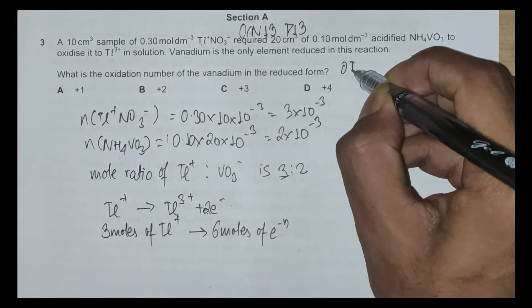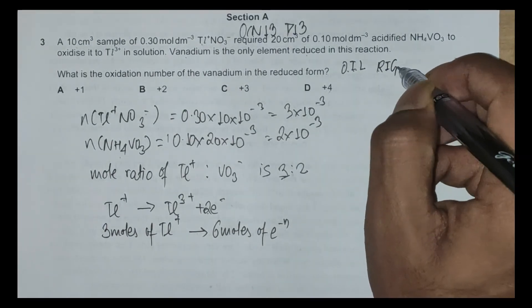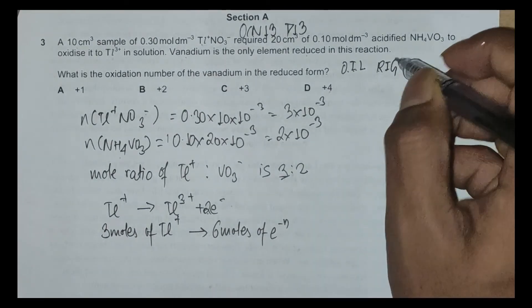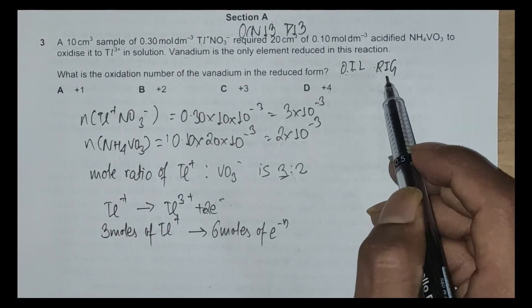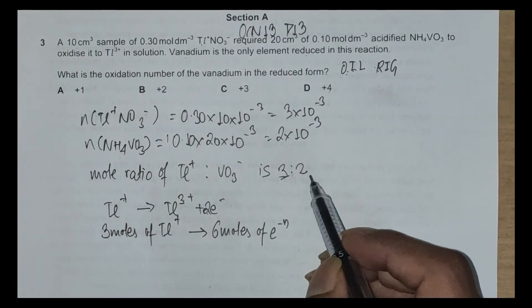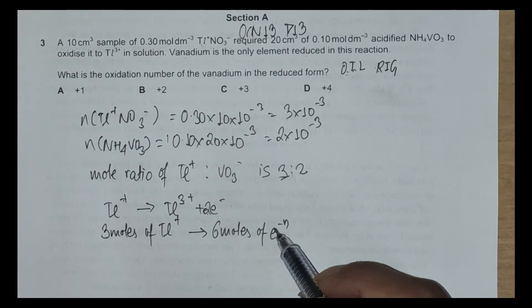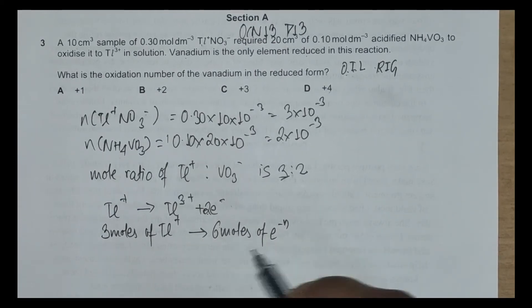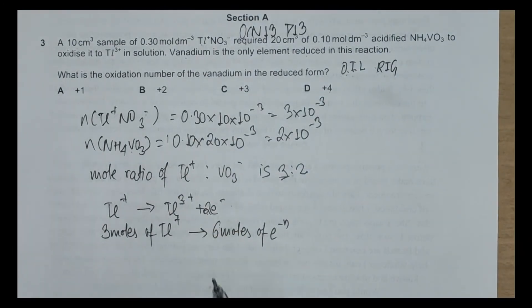Why we are concerned with moles of electrons is because electrons are concerned with reduction-oxidation reactions. If we look at the acronym OIL RIG, we know oxidation is loss of electrons, reduction is gain of electrons. These 6 moles of electrons can't just vanish, they have to go somewhere, and these 6 moles of electrons go to the vanadium side, this VO₃⁻.